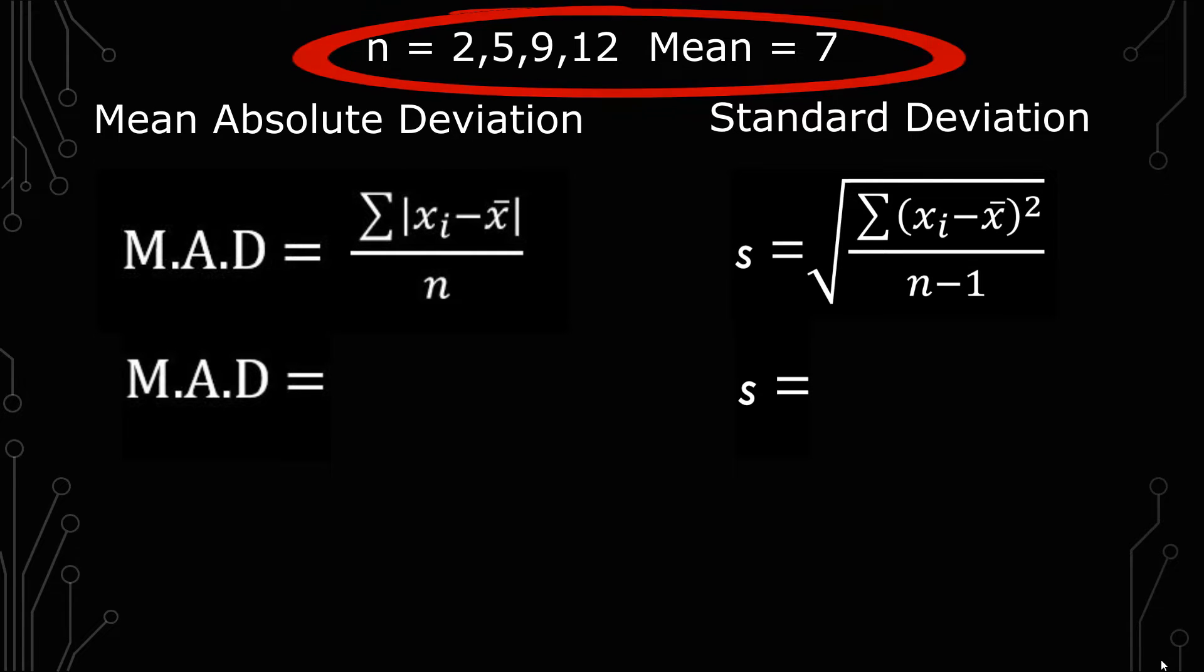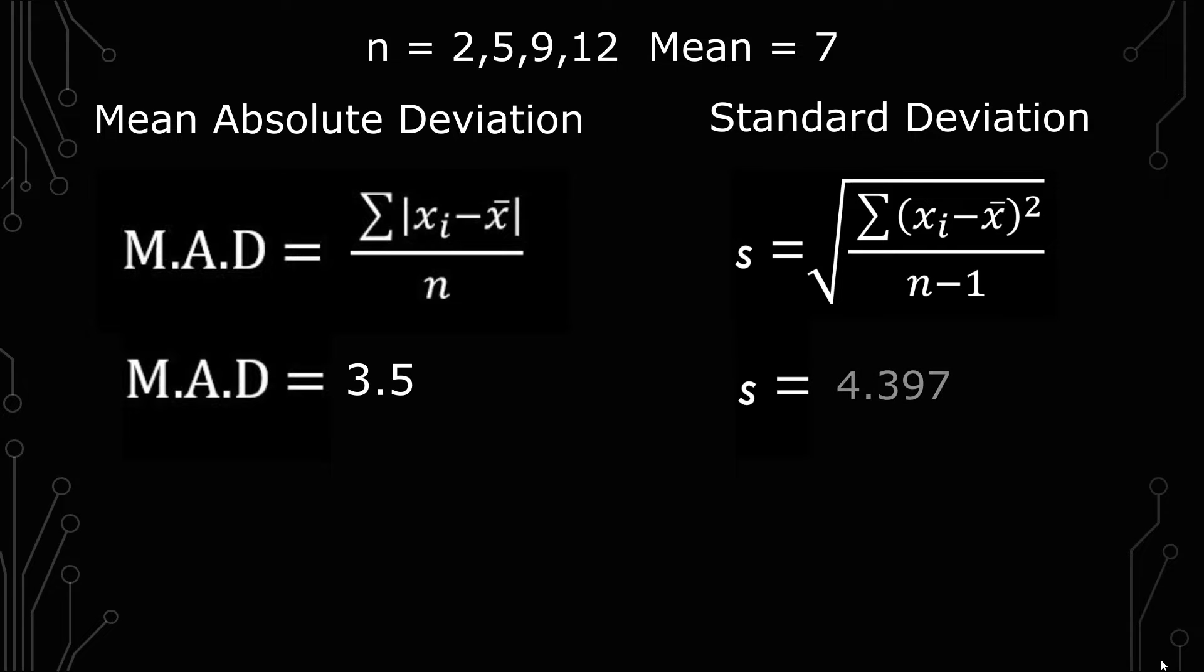So the MAD for those four numbers is 3.5. The standard deviation is 4.397. And the reason why that's important is because you can tell one is drastically different from the other. The other seems a little bit more intuitive based off the formula.